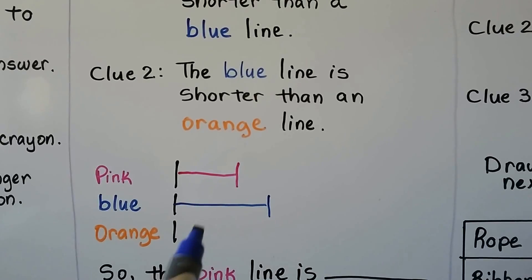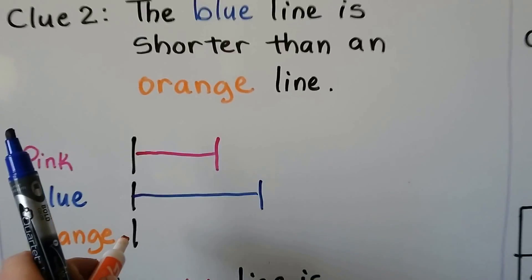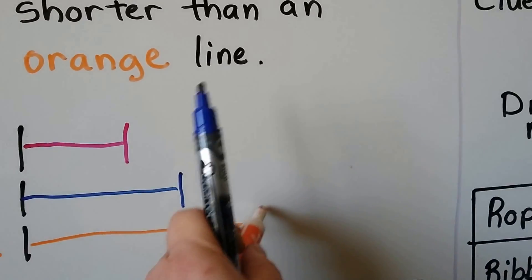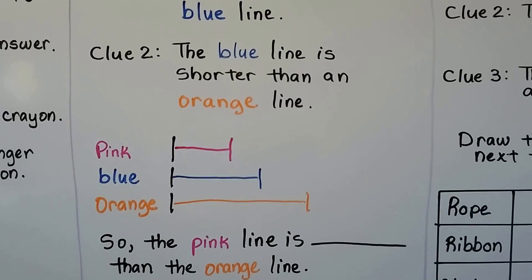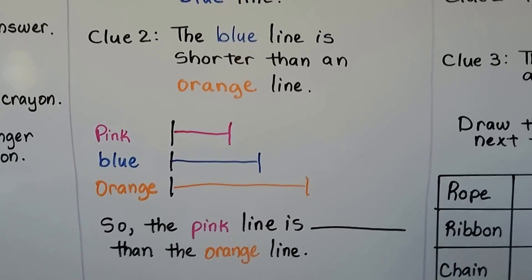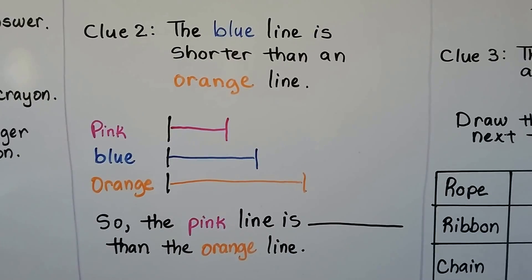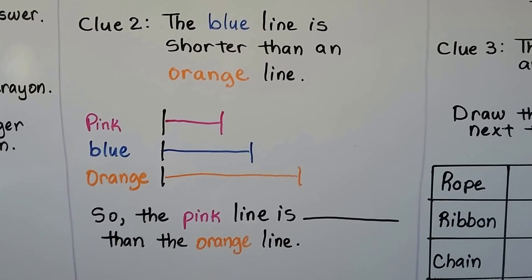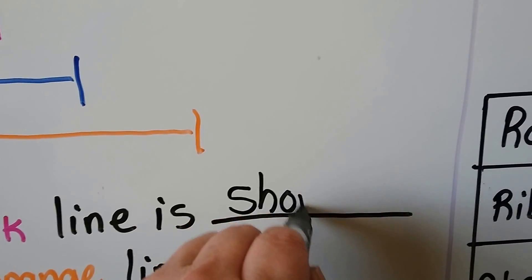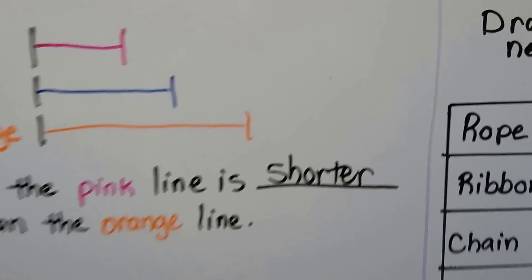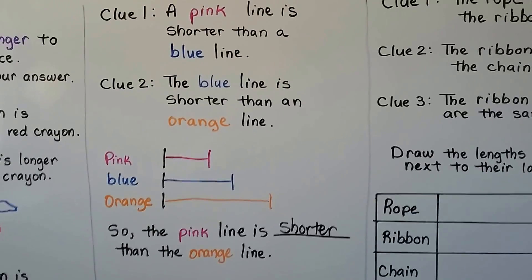The blue line is shorter than an orange line. If the blue one is shorter than the orange one, then the orange one needs to stick out farther — we need to make the orange one longer. So the pink line is blank than the orange line. The pink line is shorter than the orange line. We followed the clues and made the sentence true.